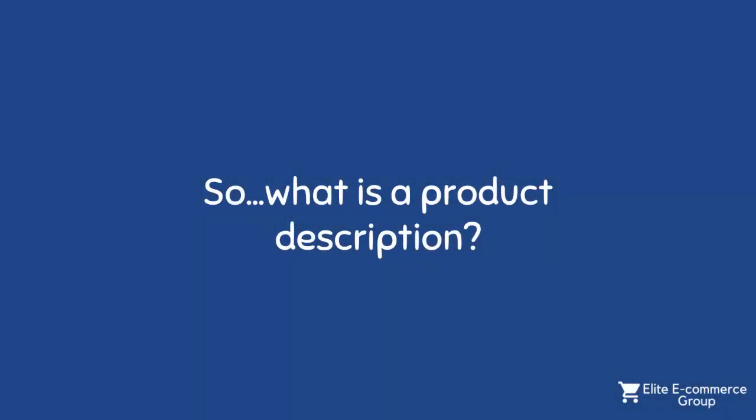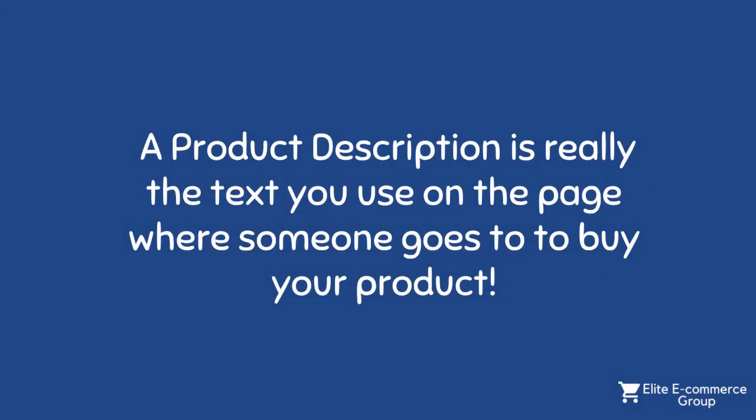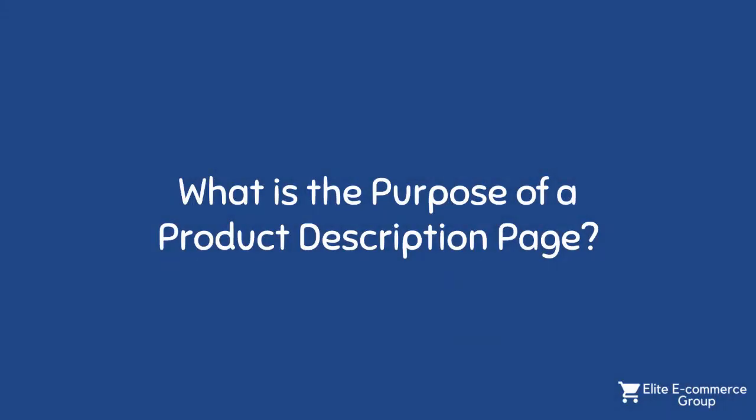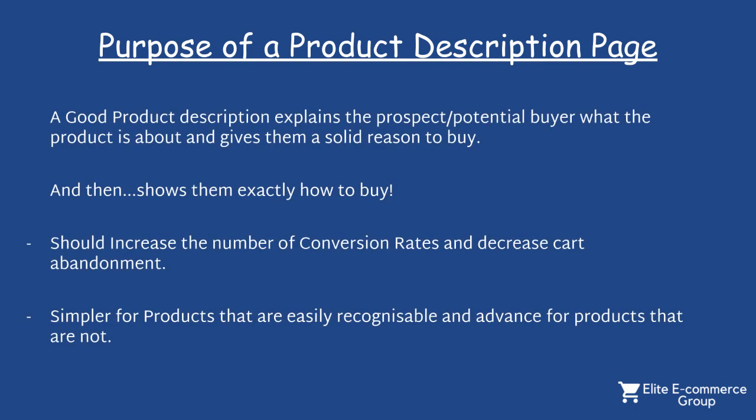So what is a product description? A product description is really just the text that you actually use on a page where someone goes to buy a product. The purpose of a product description is that a good one explains the prospect or the potential buyer who just visited the website what the product is about, and it gives them a solid reason to buy — so it's sort of like a mini sales letter.